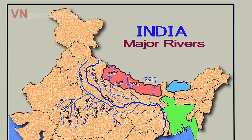River Son joins River Ganga. The tributaries of River Son are Rihand and Koyal. In West Bengal, River Ganga is joined by Mayurakshi and Damodar.